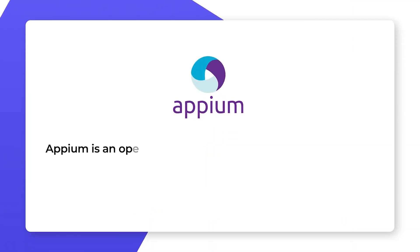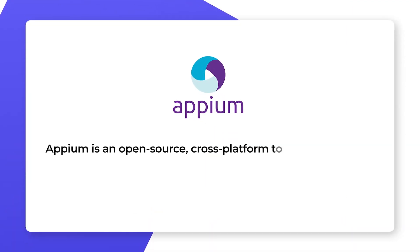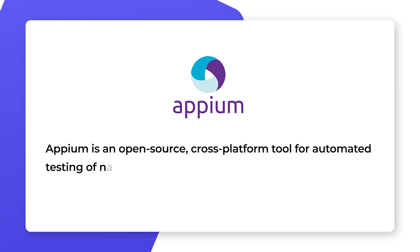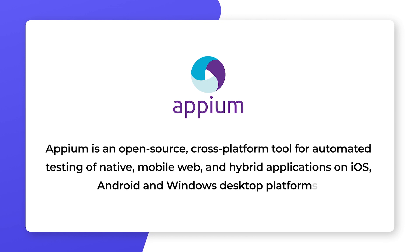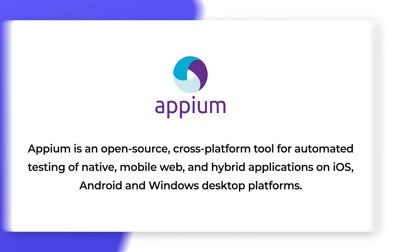Appium is an open-source, cross-platform tool for automated testing of native, mobile web, and hybrid applications on iOS, Android, and Windows desktop platforms.